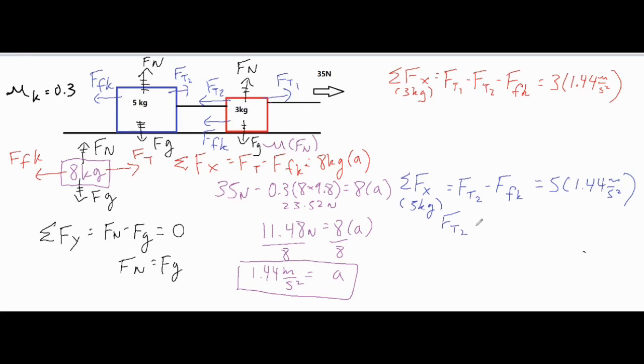That's our main unknown variable. And then we're going to subtract the force of friction, which is the mu times the normal force. Remember, the normal force is the same as the Fg, which is mass times 9.8. And that equals mass times the acceleration, which comes out to about 7.2 newtons.